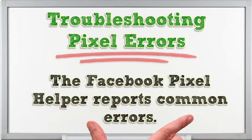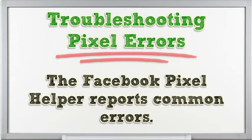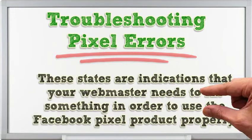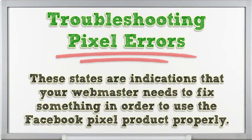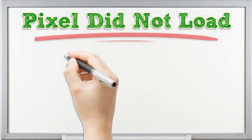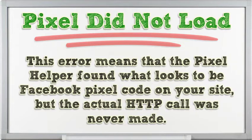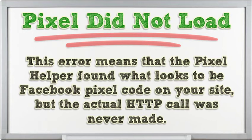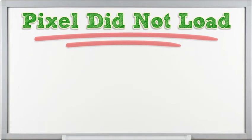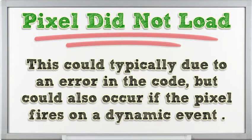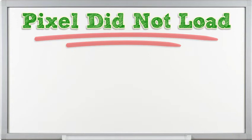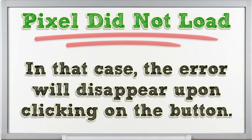Troubleshooting Pixel Errors. The Facebook Pixel Helper reports common errors — these are indications that your webmaster needs to fix something in order to use the Facebook Pixel product properly. Pixel did not load: this error means that the Pixel Helper found what looks to be Facebook Pixel code on your site, but the actual HTTP call was never made. This could typically be due to an error in the code, but could also occur if the Pixel fires on a dynamic event. In that case, the error will disappear upon clicking on the button.